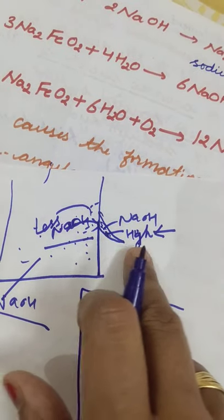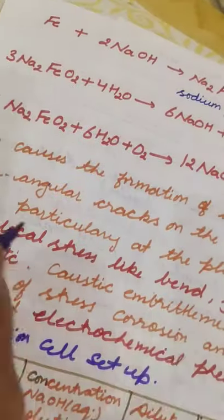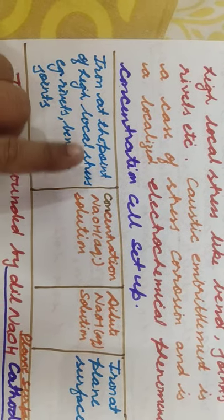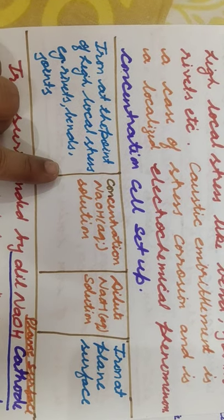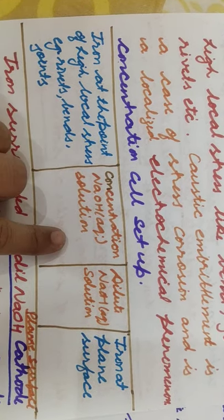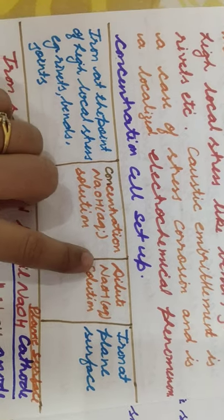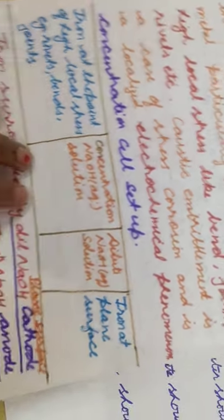Here is the concentration of NaOH on one side, and here is the concentration on the other side. This cell formation uses the concentration difference of NaOH. So a high and low concentration cell forms in this way.